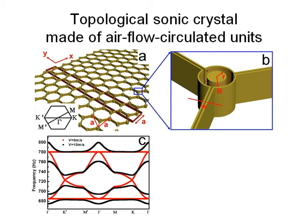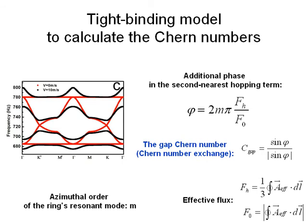To demonstrate the non-trivial topological properties of the frequency bands, we utilize the tight-binding model to analyze the Chern numbers around the Dirac point. The nearest neighbor rings are connected by the waveguide without airflow, so there is no additional phase at the nearest hopping term. However, the second nearest hopping path will occupy one-third of another ring, and the airflow inside the ring will induce an effective vector potential, generating an additional phase phi. In our case, phi is minus 2π over 3, and so the gap Chern number is minus 1.